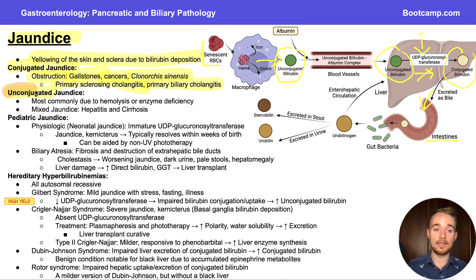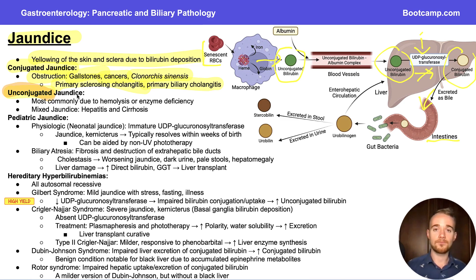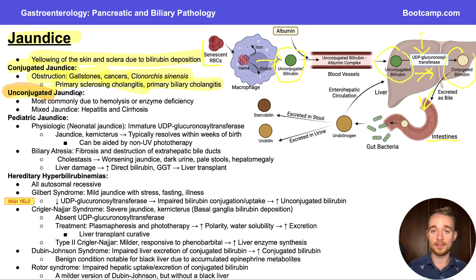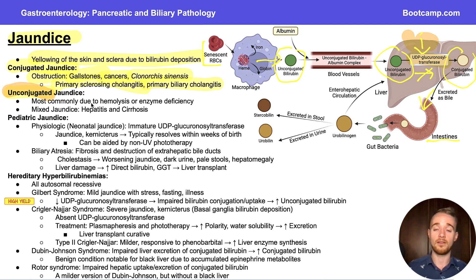Two of our most common forms of jaundice — alcoholic jaundice and jaundice from viral hepatitis — are both going to be mixed jaundices, meaning we have an increase in both unconjugated and conjugated bilirubin, typically with a ratio of 20 to 50 percent conjugated to unconjugated bilirubin, especially for viral hepatitis. These are both processes happening inside the liver that not only impair UDP-glucuronosyltransferase activity, but also impair the liver's ability to properly excrete bile, causing fibrosis and damage to intrahepatic bile ducts, thus raising both forms of bilirubin.